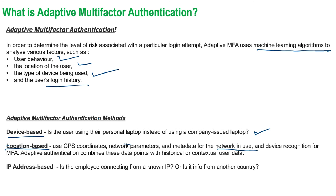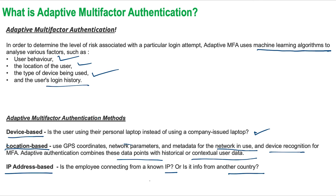Adaptive authentication combines the network used and device recognition with historical or contextual user data. Next is IP address verification — checking whether the employee is connected from a known IP address, performing all relevant IP-related checks.